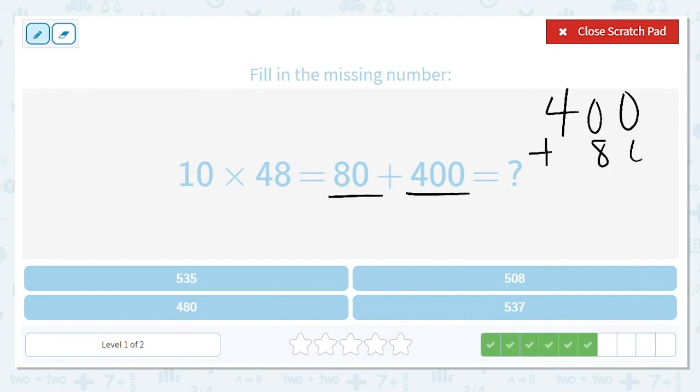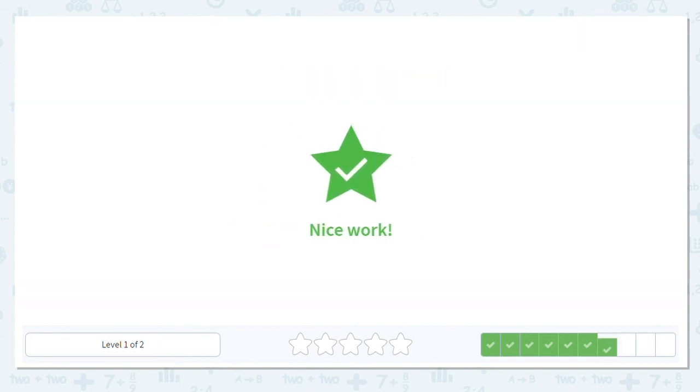400 plus 80, is that okay? Yes, commutative property. You can flip them and you're still going to get the same answer. So what is my answer? What's my total? 480. Good job.